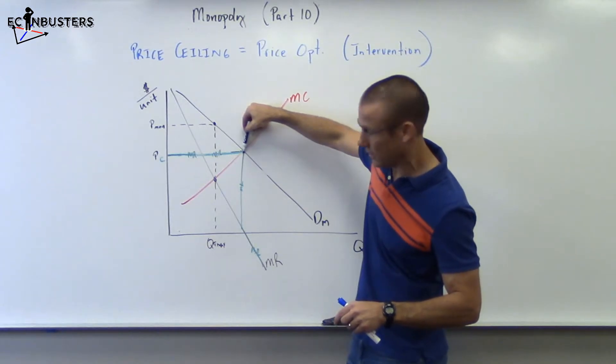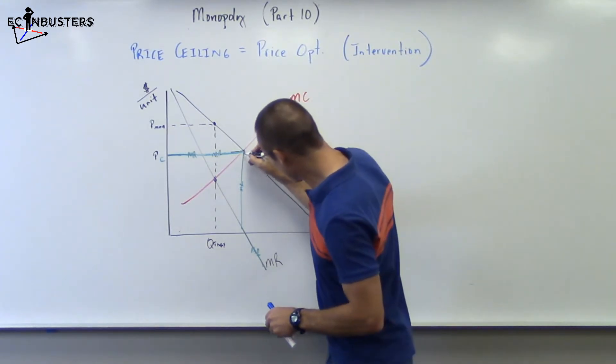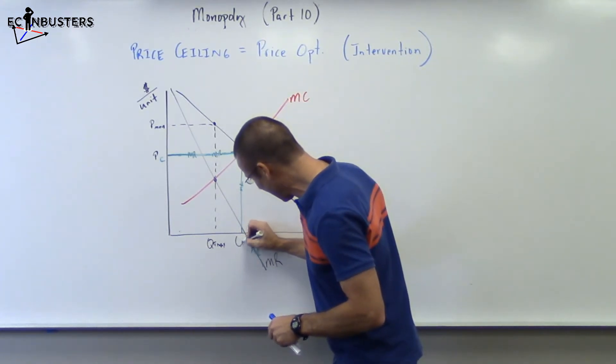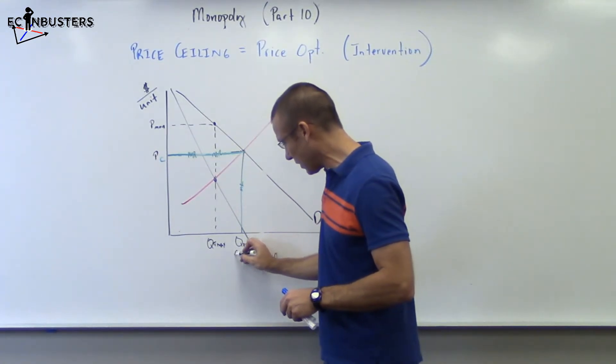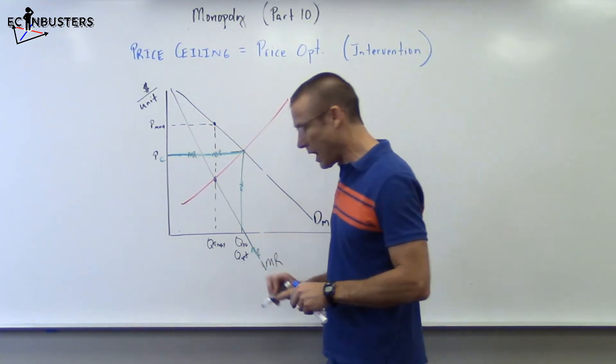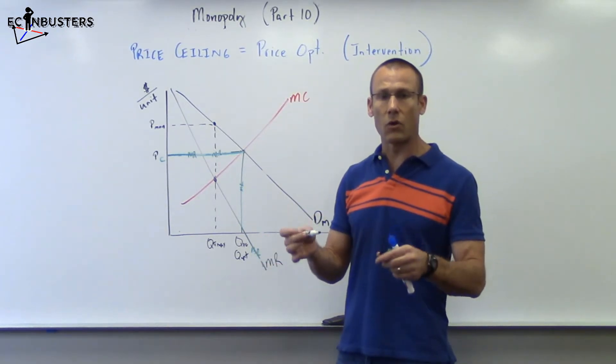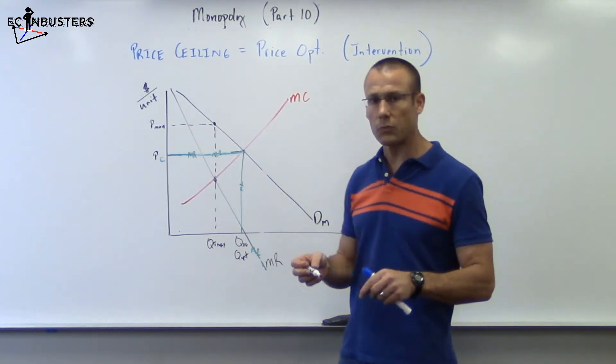But what we're actually going to get is a higher level output because MR is exceeding MC all the way up until that dot right there. So bring that down, this is our Q with our price ceiling. It's also our Q opt. We've actually gotten all the way to Q opt, which is a weird outcome but it can happen.